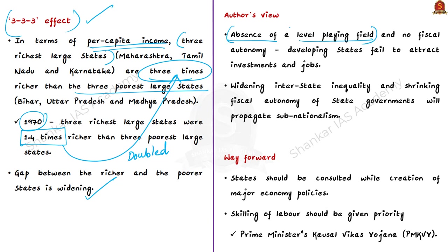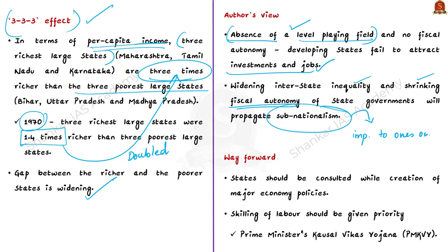In the absence of a level playing field and with no fiscal autonomy, it is enormously difficult for developing states in India to attract new investments and create new jobs. The author opines that this potent combination of widening interstate inequality and shrinking fiscal autonomy will inevitably spread subnationalism among states. Subnationalism is the idea of asserting the interest of one's own state or region as being separate from the interest of the nation, and it can be dangerous to nationhood if unchecked.